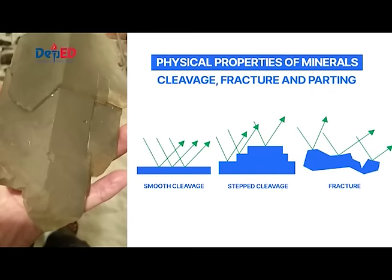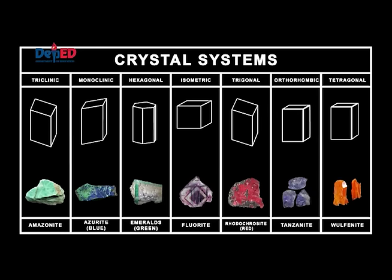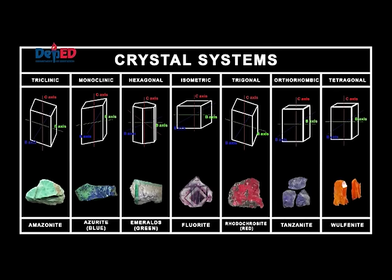Softer minerals can be scratched by harder minerals because the forces that hold the crystal together are weaker. Minerals tend to break along lines or smooth surfaces when hit sharply. Different minerals break in different ways, showing different types of cleavage. The other property is crystalline structure or habit. Mineral crystals occur in various shapes and sizes. The particular shape is determined by the arrangement of the atoms, molecules, or ions that make up the crystal and how they are joined, called the crystal lattice.